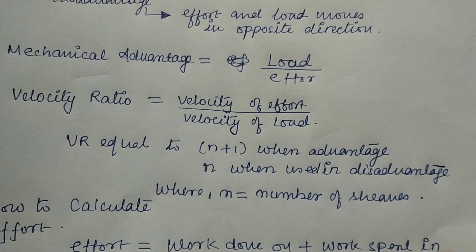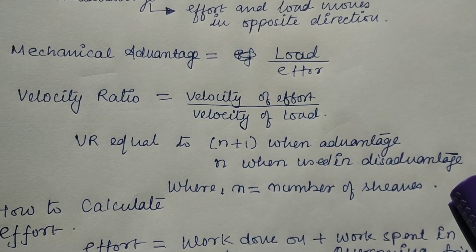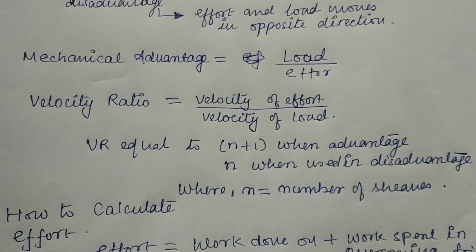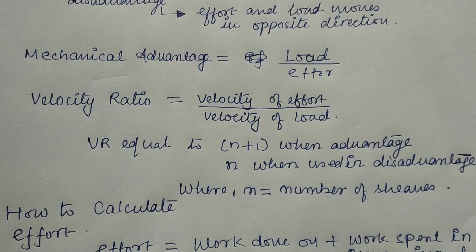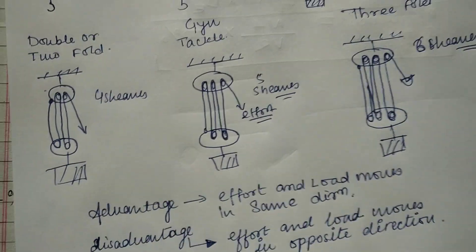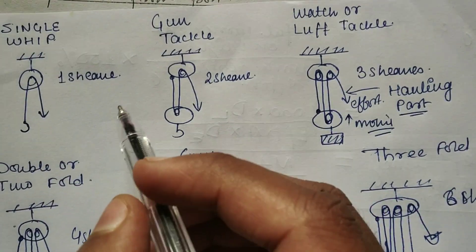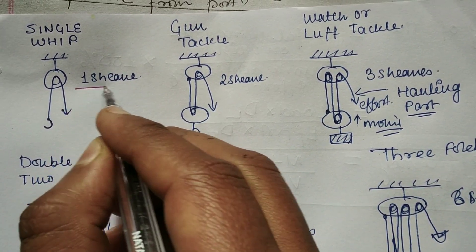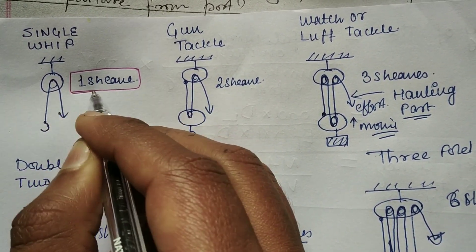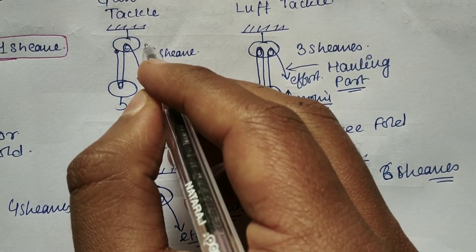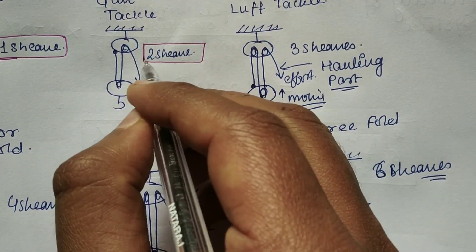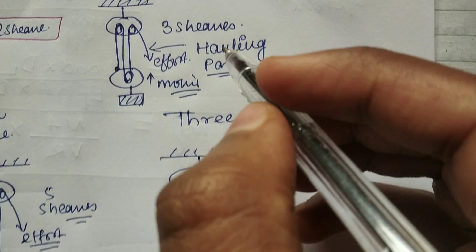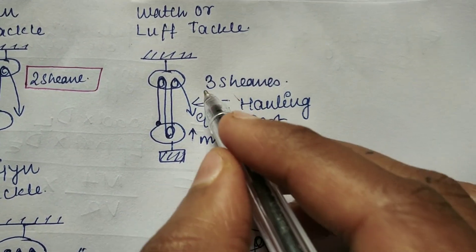Now we'll see different types of blocks and purchases that you need to remember – the name and number of sheaves in each. First is single whip, which has one sheave. Gun tackle has two sheaves. Watch and luff tackle has three sheaves.